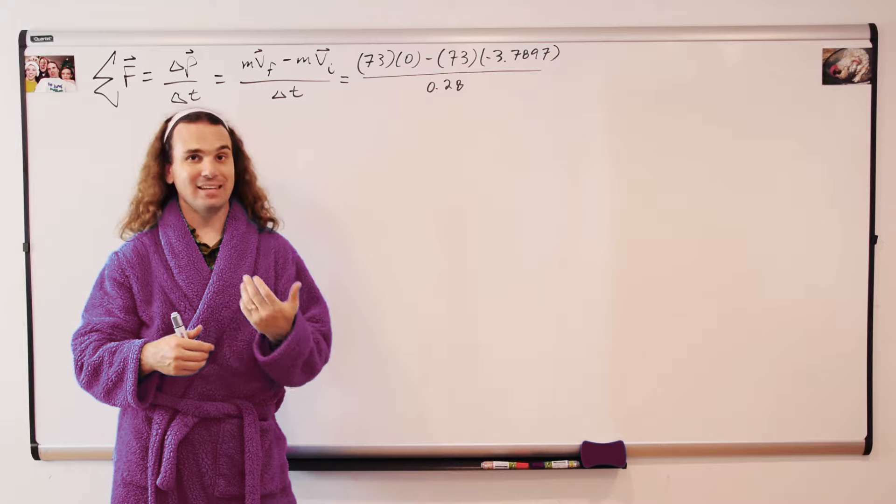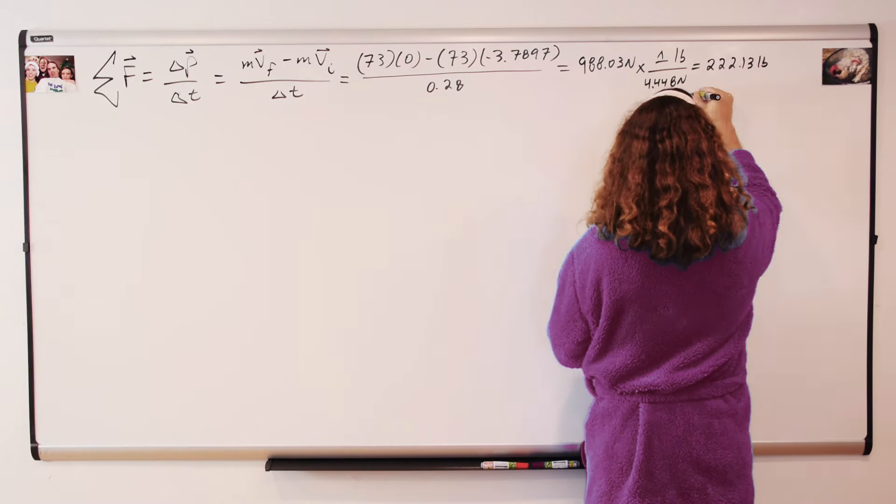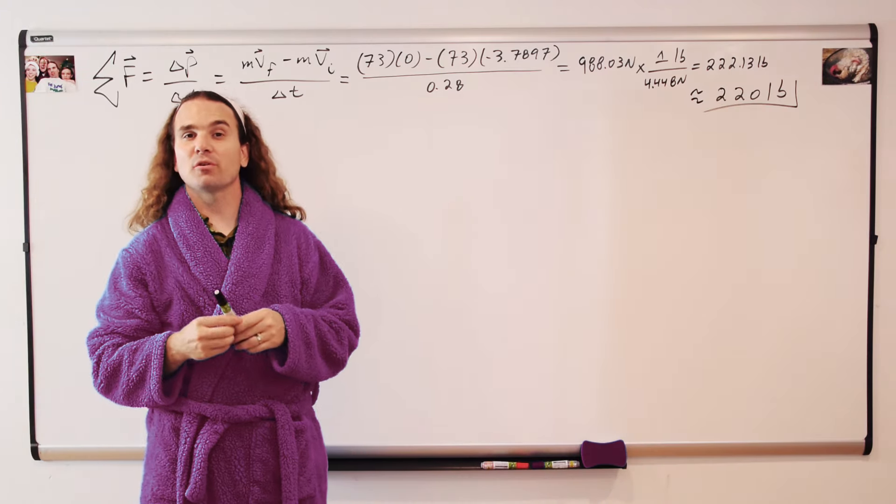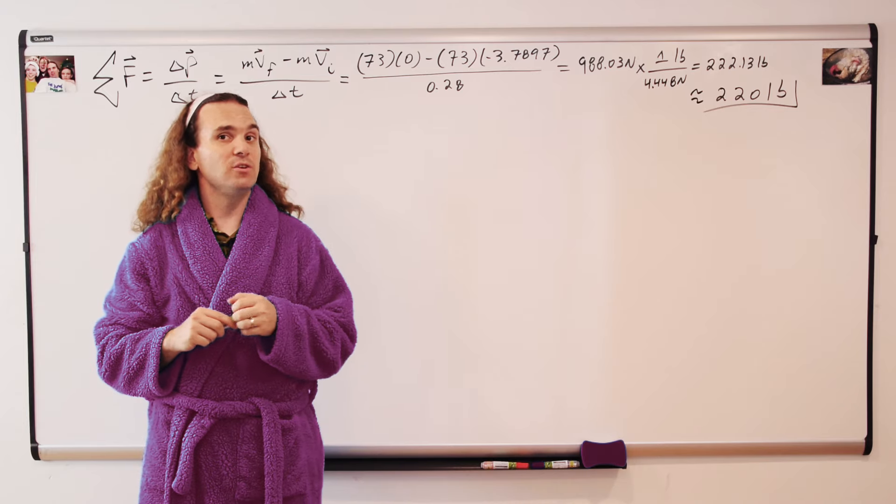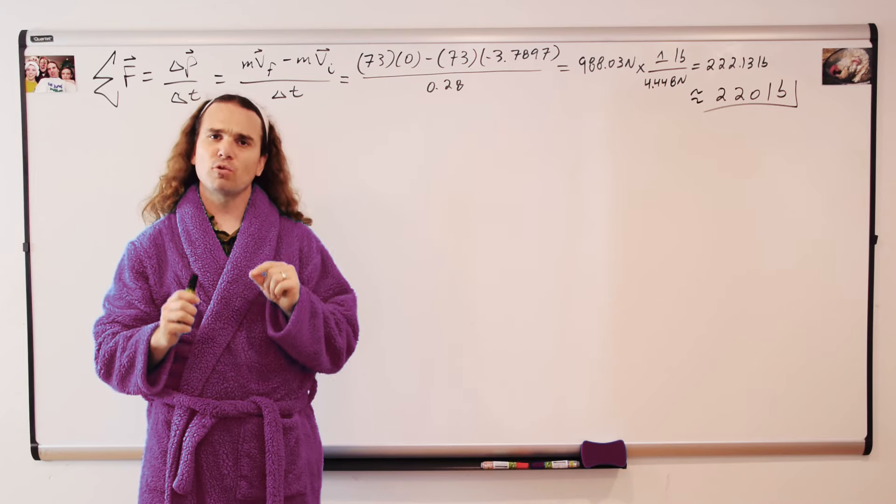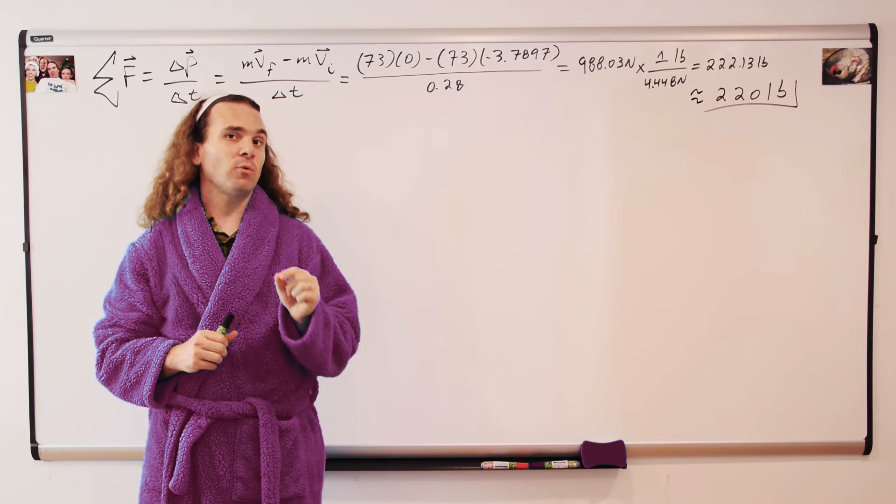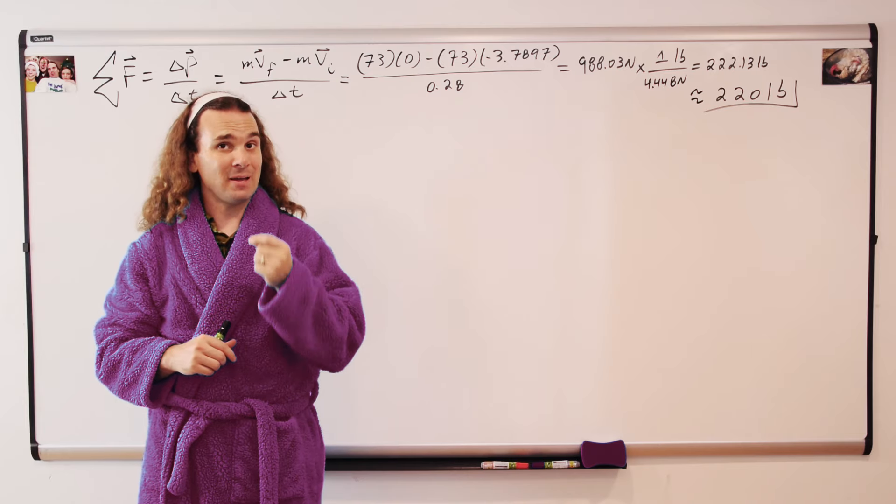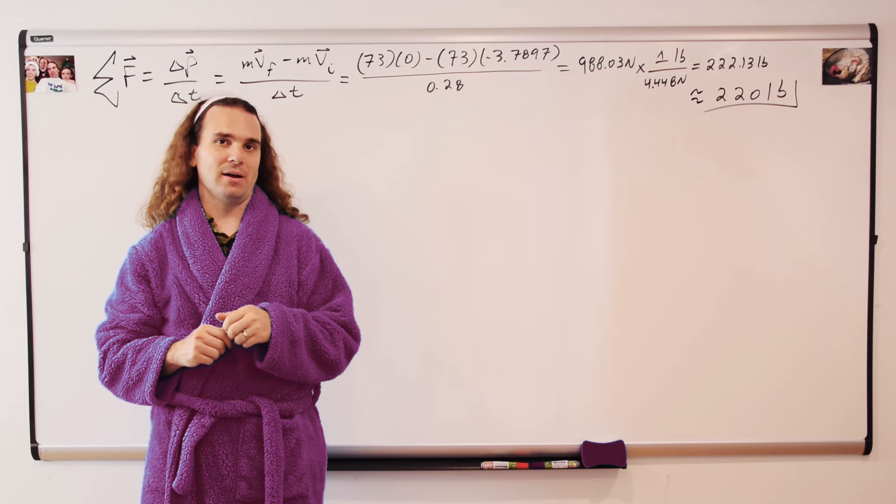And therefore, the force of impact is 988.03 newtons or with 4.448 newtons in every pound. The force of impact acting on my body when I collide with the ground and bend my knees is roughly 220 pounds.